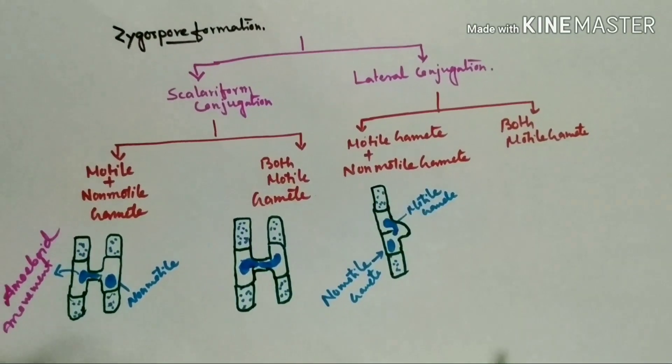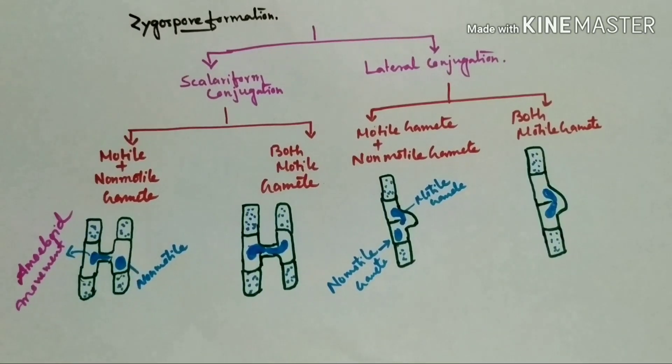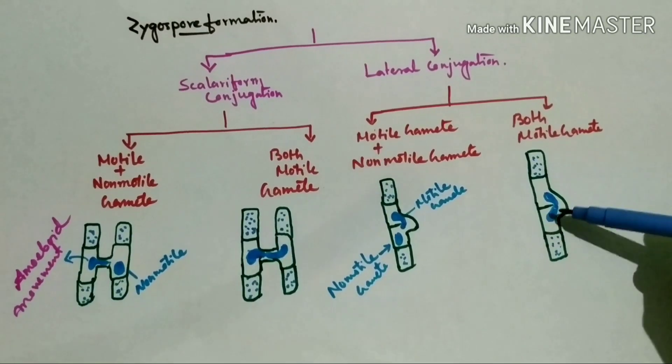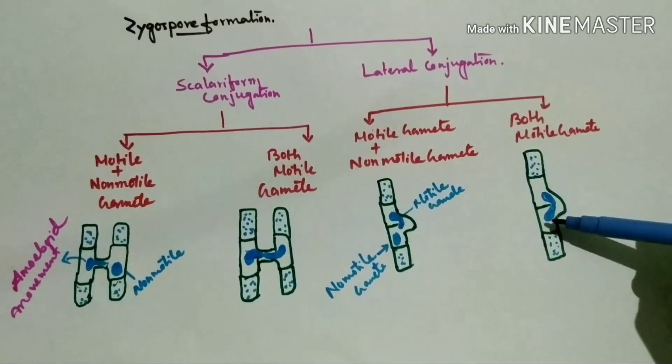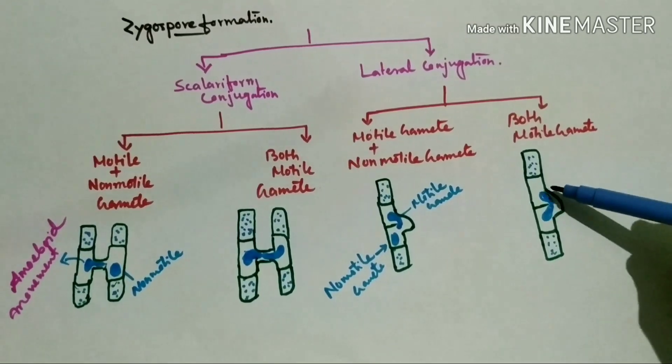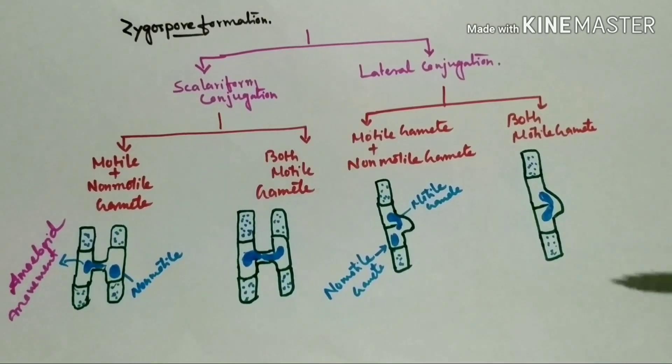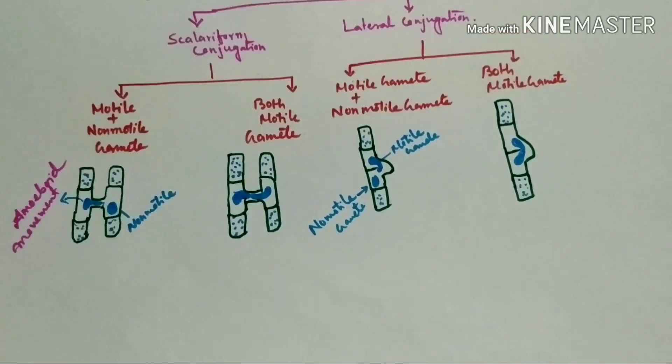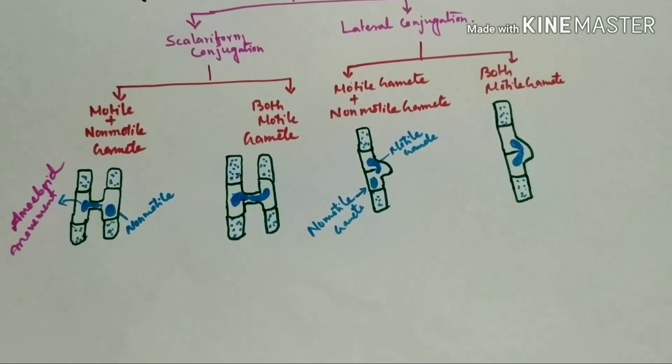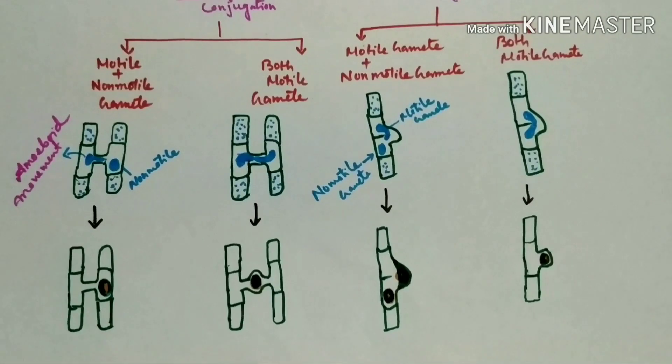When both are motile gametes, in that case both gametes come and fuse within this conjugation tube. Here also, both gametes come and fuse within this conjugation tube.